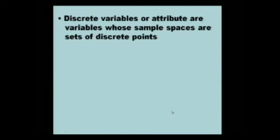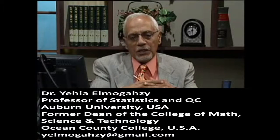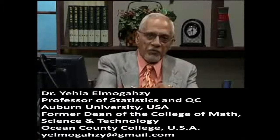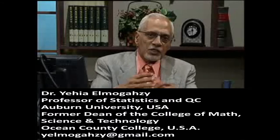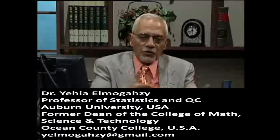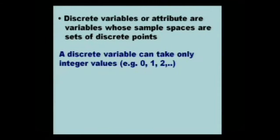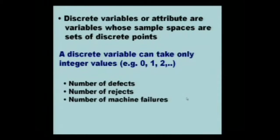On the other hand, discrete variables are what we call attribute variables in SPC. Those are the variables whose sample spaces are sets of discrete points. These are the ones that we deal with when we have to count defects, number of failures, or number of passes. They are the type of stop-and-go, yes-or-no, pass-or-fail type variables. Some examples would be number of defects, number of rejects, number of machine failures. All of these are called discrete variables.